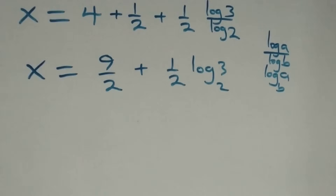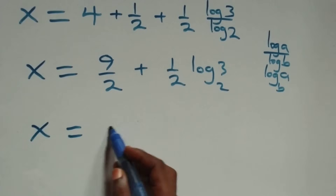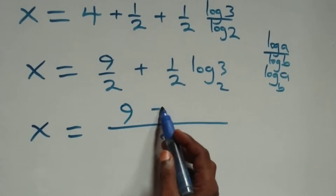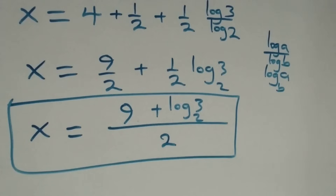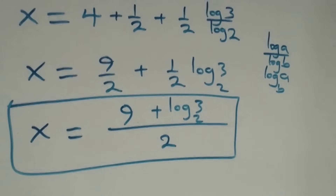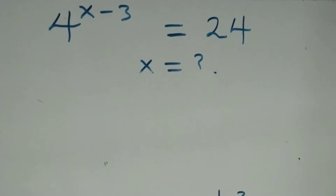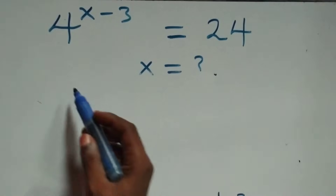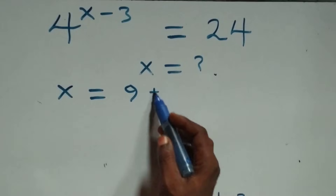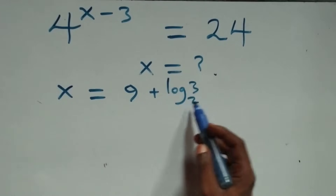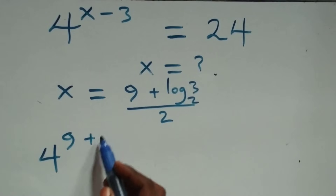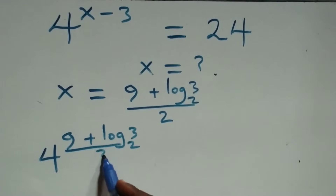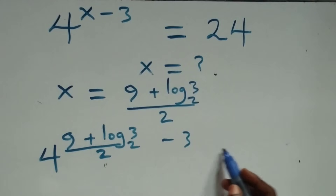Bringing the terms together as one fraction: four plus one half gives nine over two, so x equals nine over two plus one half log three base two, which equals nine plus log three base two all over two. Let's now verify this satisfies the original equation by substituting x equals nine plus log three base two all over two into four raised to power x minus three equals twenty-four.